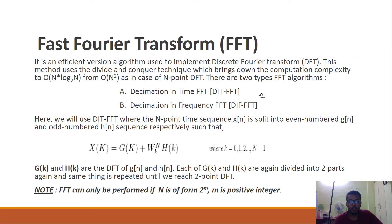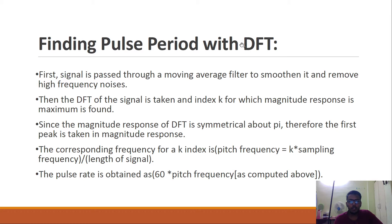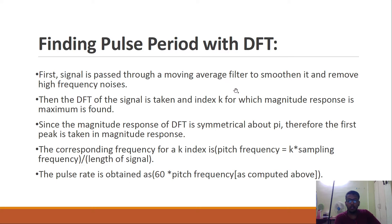Now let us see how to calculate the pulse rate using FFT. Since FFT is nothing but a discrete Fourier transform, there is just a difference in computational algorithms. First we are going to pass the signal through a moving average filter to smooth it and remove high-frequency noise. Then we take the DFT of the signal and calculate the index where the magnitude response is maximum. Since the magnitude response of the DFT is symmetrical about pi, we take the first peak. Then we calculate the pitch frequency as: pitch frequency equals k times sampling frequency divided by the length of the signal. We then calculate the pulse rate by multiplying this by 60.